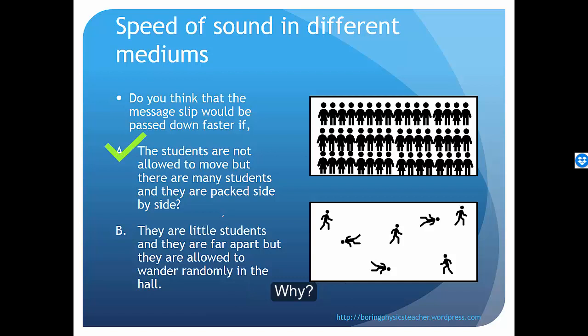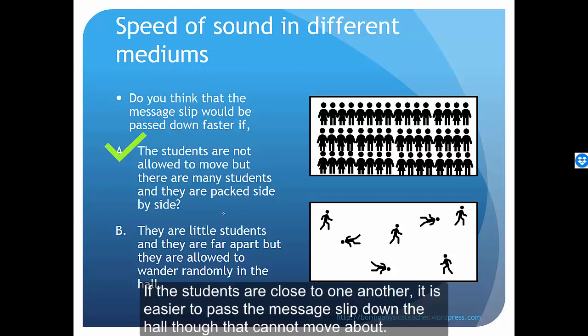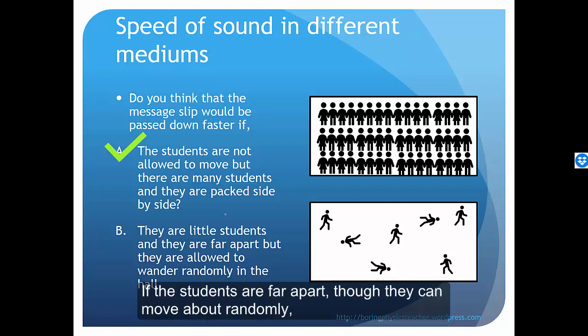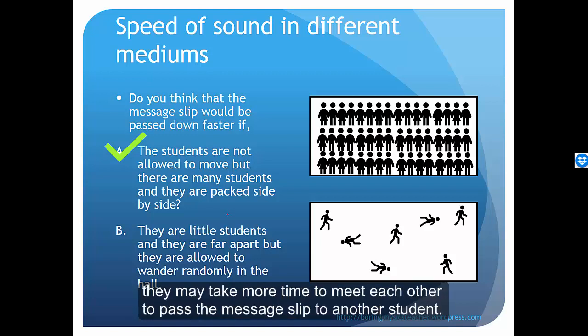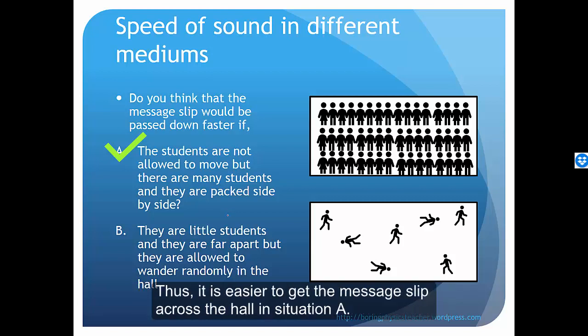The answer is A. Why? If the students are close to each other, it's actually easier to pass the message slip down the hall, though they cannot move about. But if the students are far apart, though they can move about randomly, they may take more time to meet each other to pass the message slip to another student. Thus, it is easier to get the message slip across the hall in situation A.